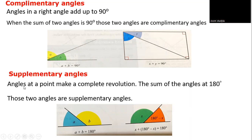Supplementary angles are angles that form a complete straight line, so the sum of the angles is 180 degrees. Those two angles are supplementary. For example, on a straight line: A + B = 180 degrees, and X + (180 − X) = 180 degrees.